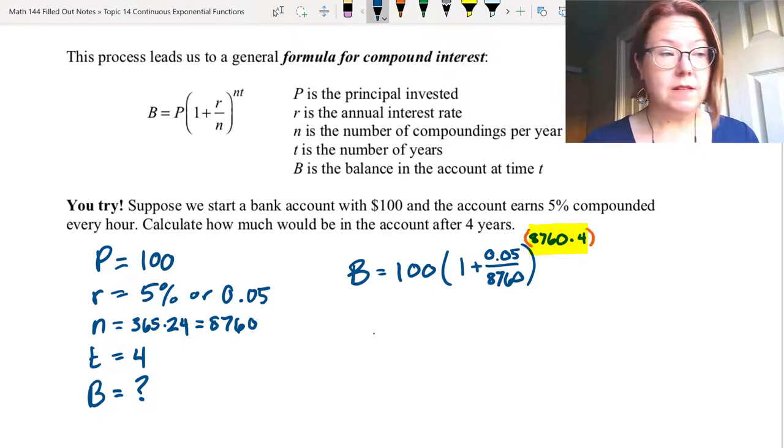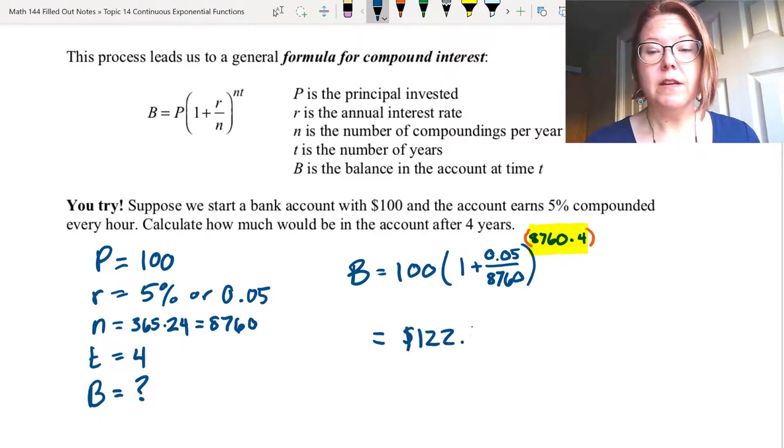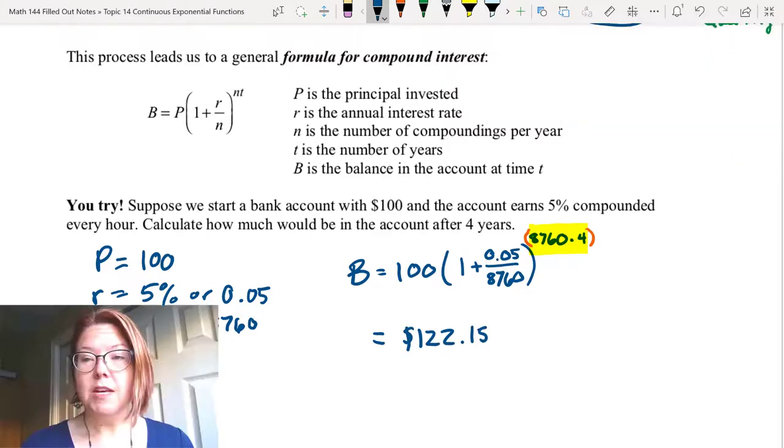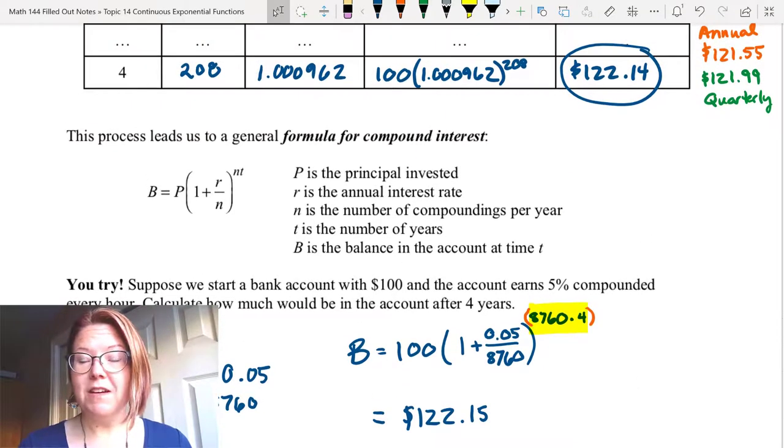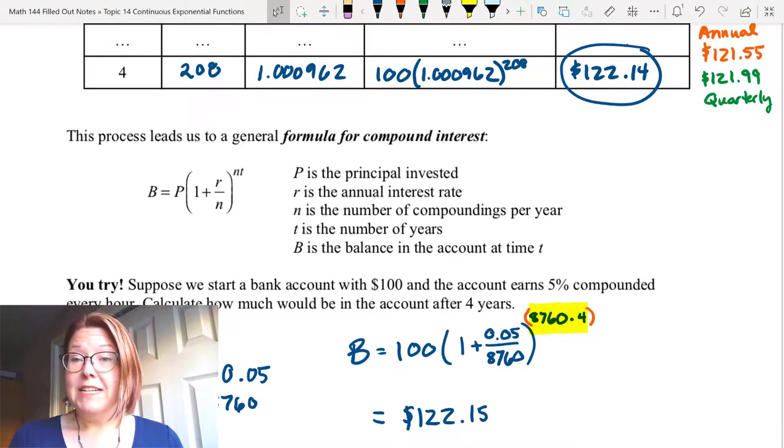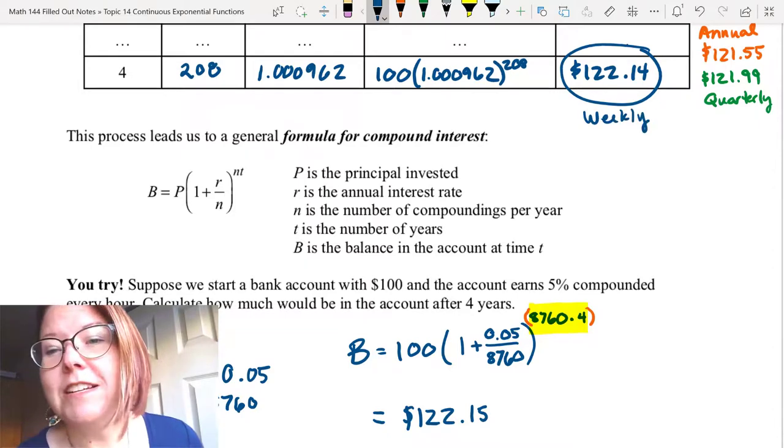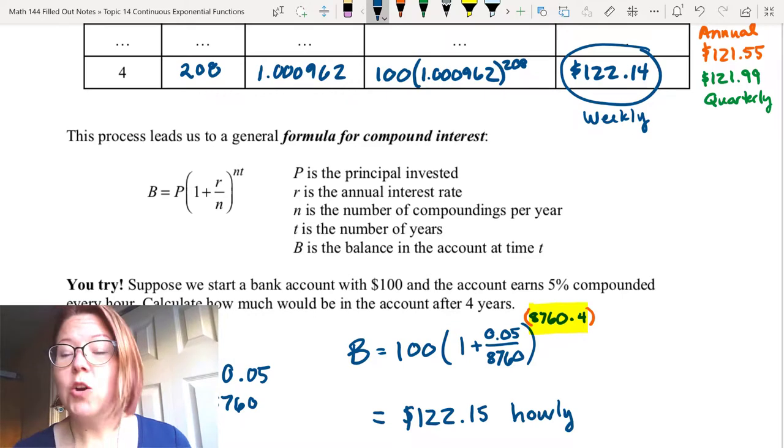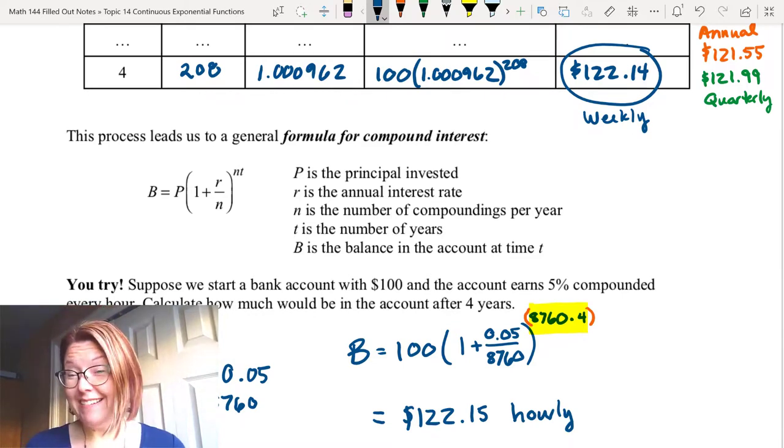The result of this calculation is $122.15. If we compare that with the results we got above, when we did weekly compounding, we earned $122.14. Hourly compounding has only gained us a penny. So while it's still growing, it's not growing by very much.